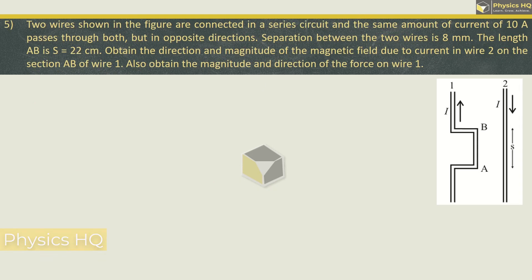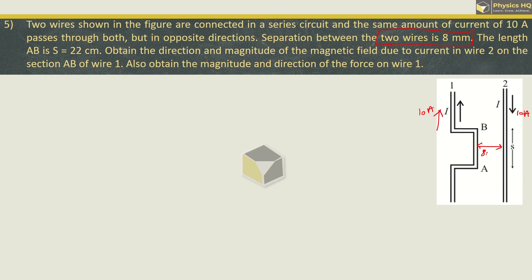Two wires shown in the figure are connected in a series circuit, and the same current of 10 ampere passes through both but in opposite directions. The separation between the two wires is 8 mm, and the length AB is 22 cm.